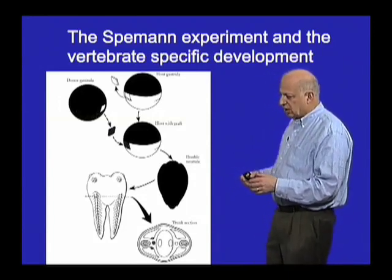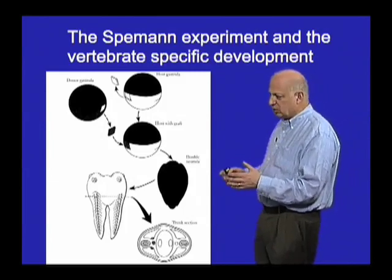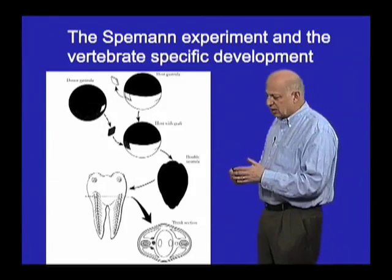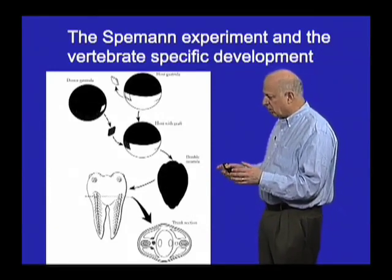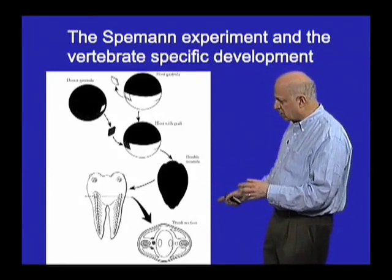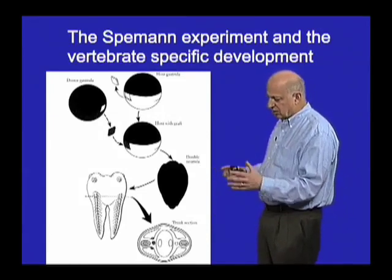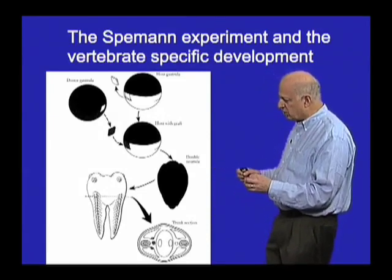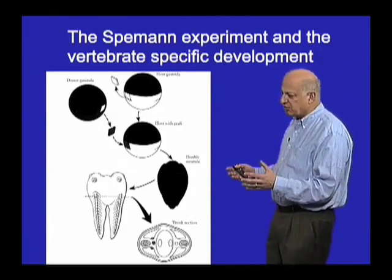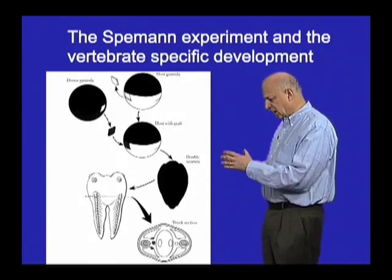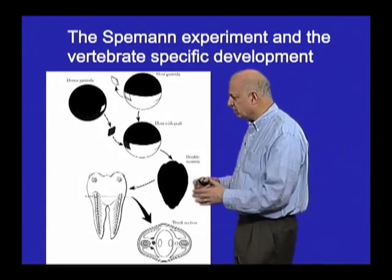It produced conjoined twins, transforming the belly tissue into an entire embryo, including the central nervous system, the somites, the notochord, and all those things you can see in the bottom of the histological section — a mirror image of the other side. Almost all those tissues arose from tissues that were re-specified by some sort of signal that came from this transplanted tissue.